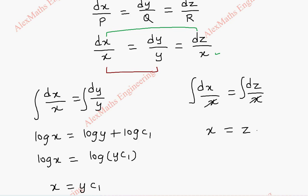And we take the constant c2. So now x minus z will be c2.